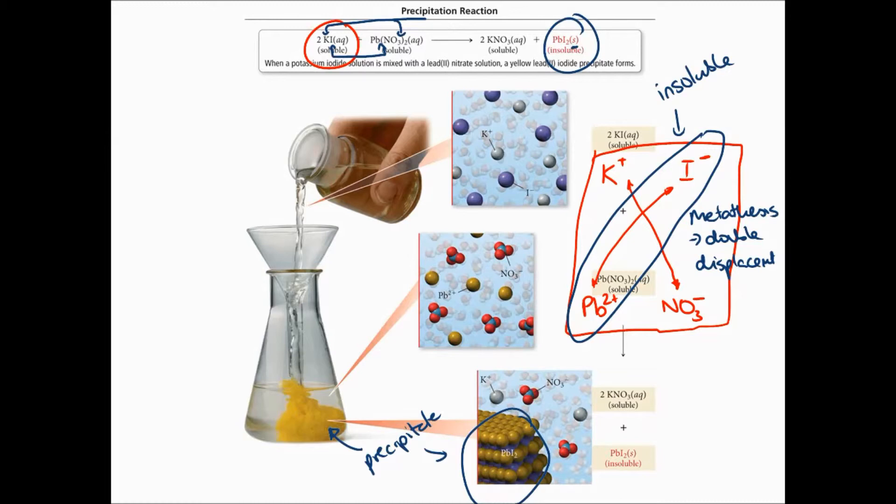Whereas potassium ions and nitrate ions are still floating around, but because potassium nitrate is soluble, they remain in solution like that.